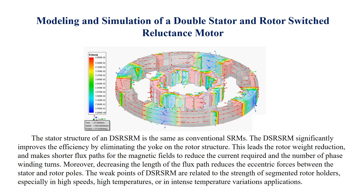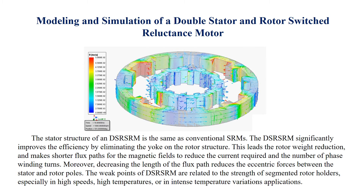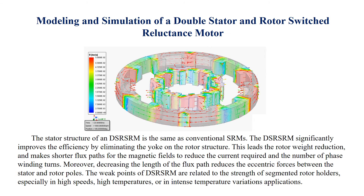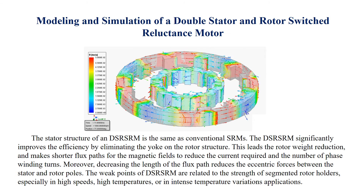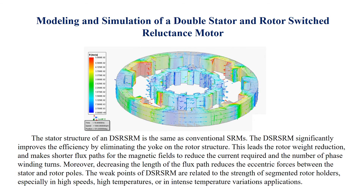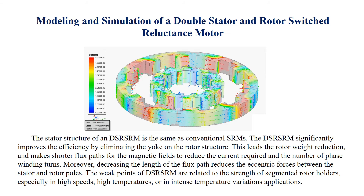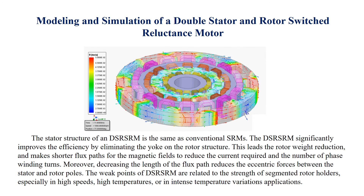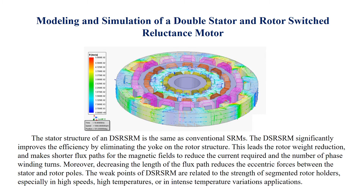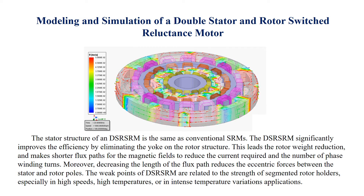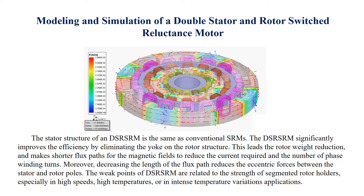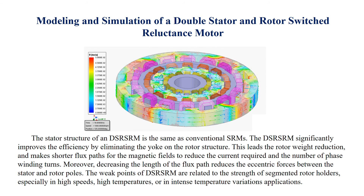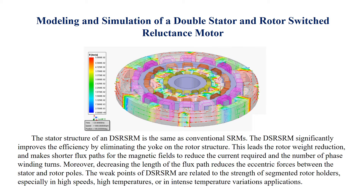Moreover, decreasing the length of the flux path reduces the eccentric forces between the stator and rotor poles. The weak points of DS-SRM are related to the strength of segmented rotor holders, especially in high speeds, high temperatures, or in intense temperature variation applications.